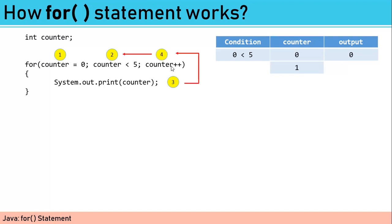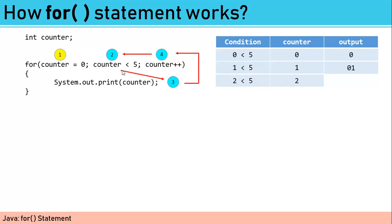Next, it will test if the condition is still true: is one less than five? That is going to be evaluated true, so it will print one. A while back it printed zero, now it adds one to the output. Again, counter will be incremented by one, so it becomes two. Then it will again test if two is less than five — that's going to be evaluated true, so it will print the value of counter, which is two. The output is now zero, one, two.